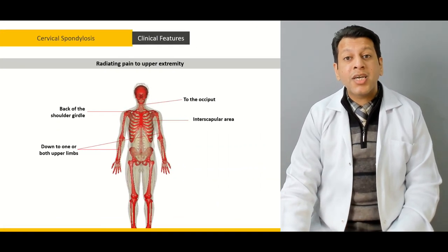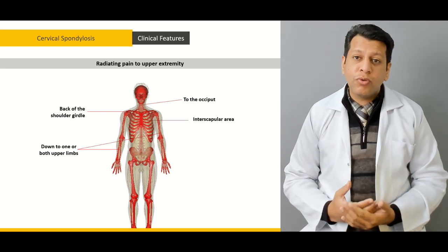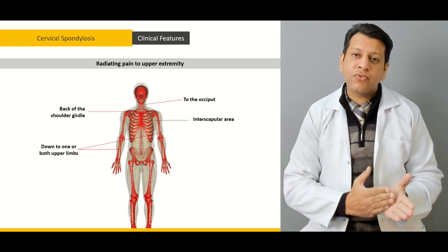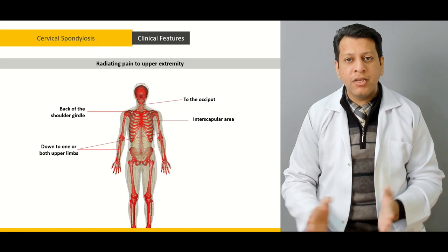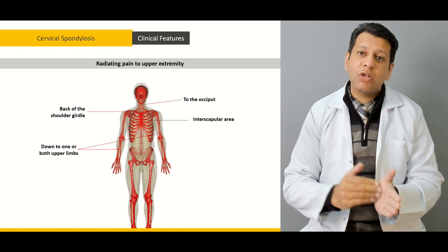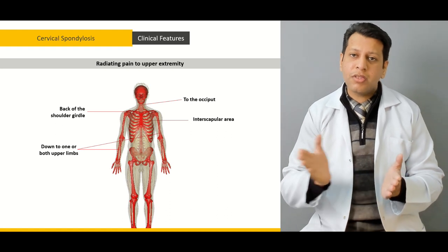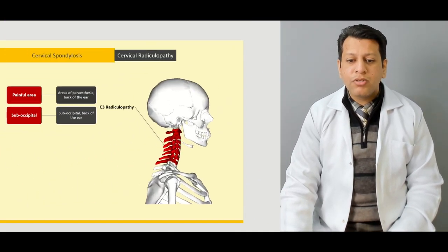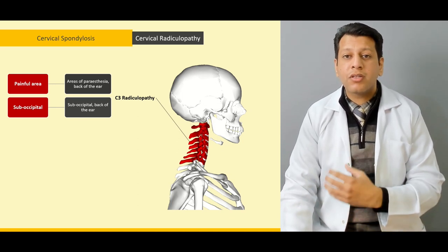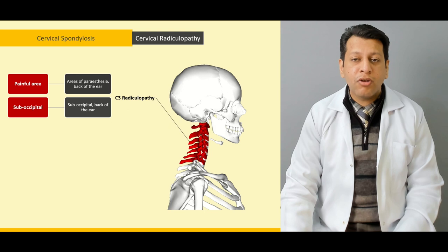From then onwards, we're moving on to how the patient presents when he or she comes with the problem of neck pain, and the overlapping symptoms of cervical spondylosis, radiculopathy, and myelopathy. We'll be discussing how to diagnose from the history as well as examination whether this patient has cervical spondylosis, radiculopathy, or myelopathy.